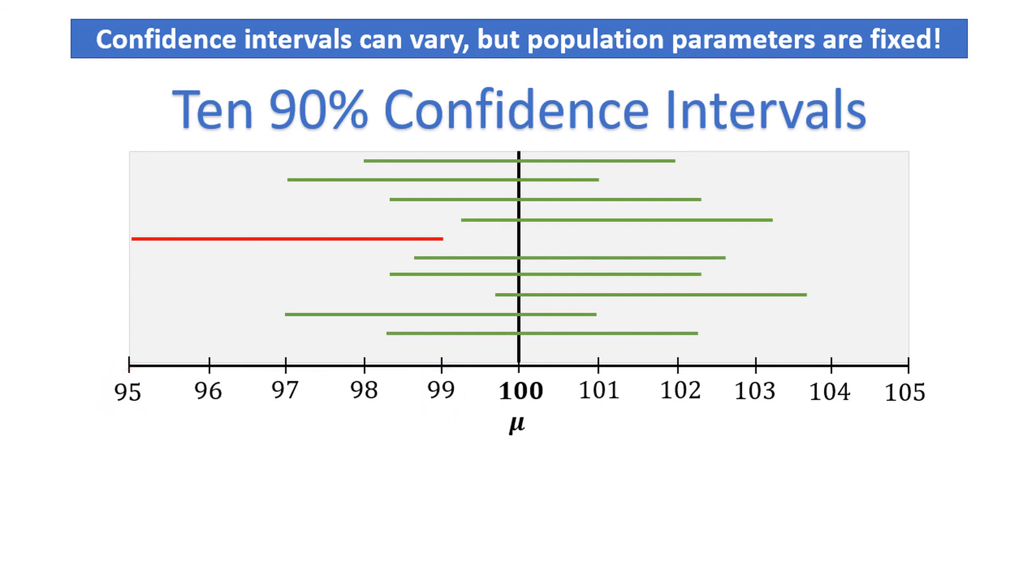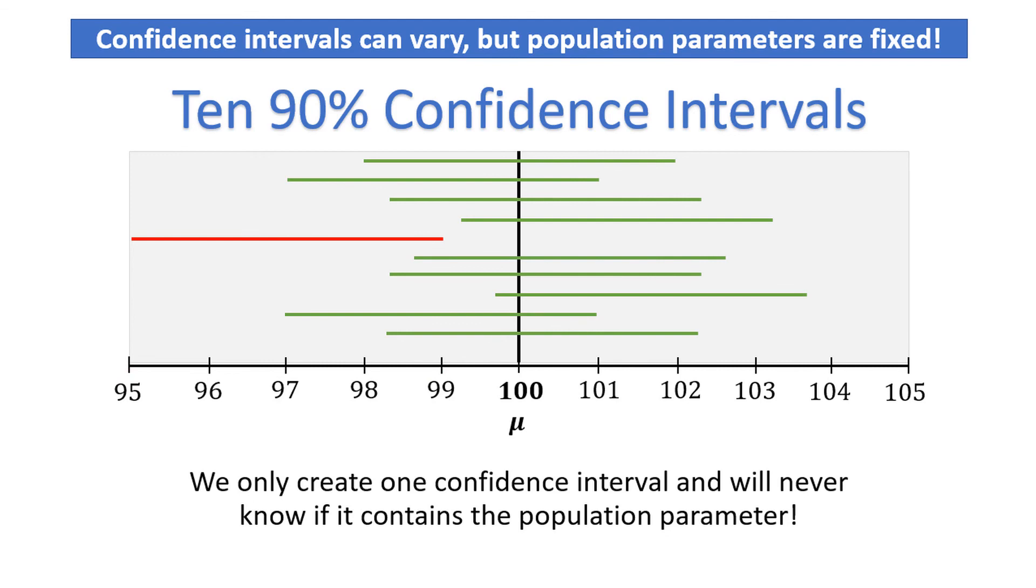In reality, we only create one confidence interval, and we'll never know if our confidence interval actually contains the population parameter. All we know is that, with some level of confidence, the interval will contain our parameter.